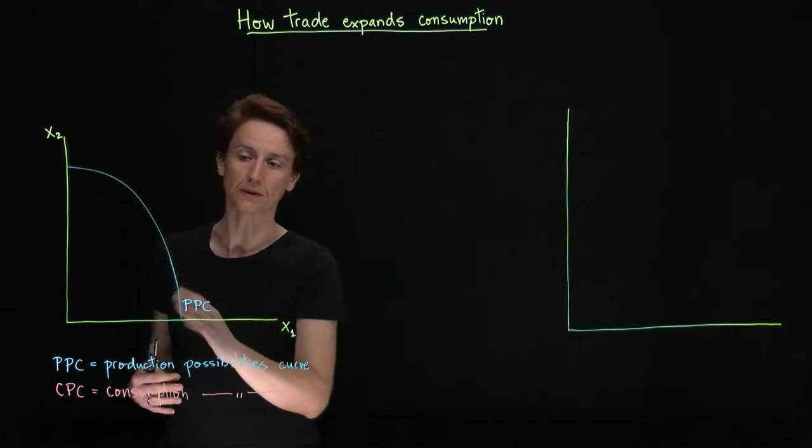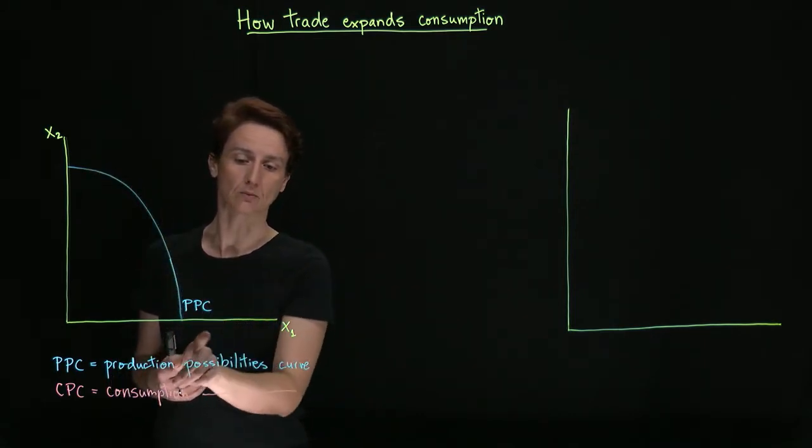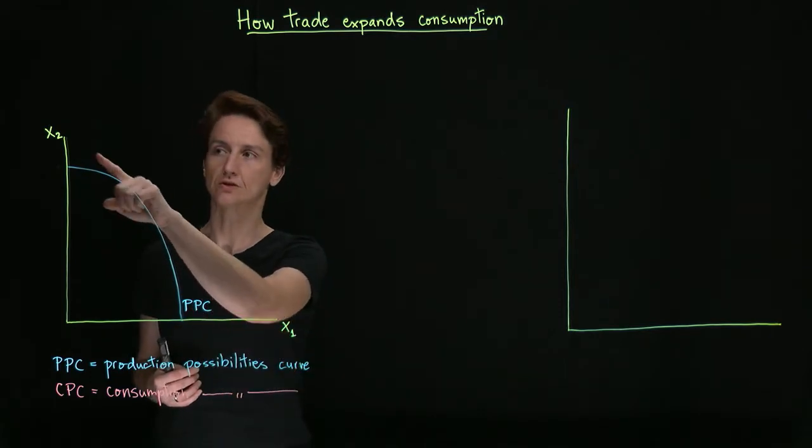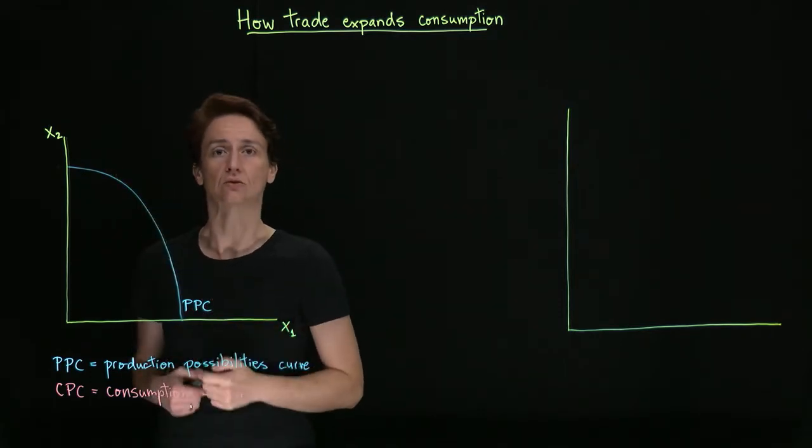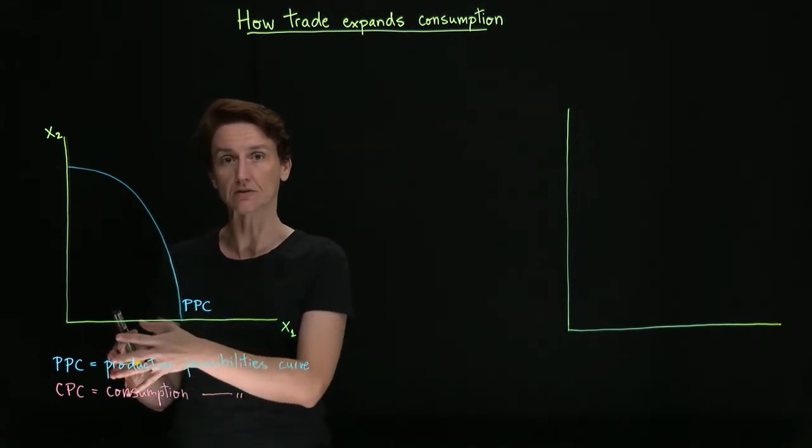The negative slope indicates that in order to make more of good one, we have to stop making some of good two. So there's always a trade-off in terms of what we put our resources in.